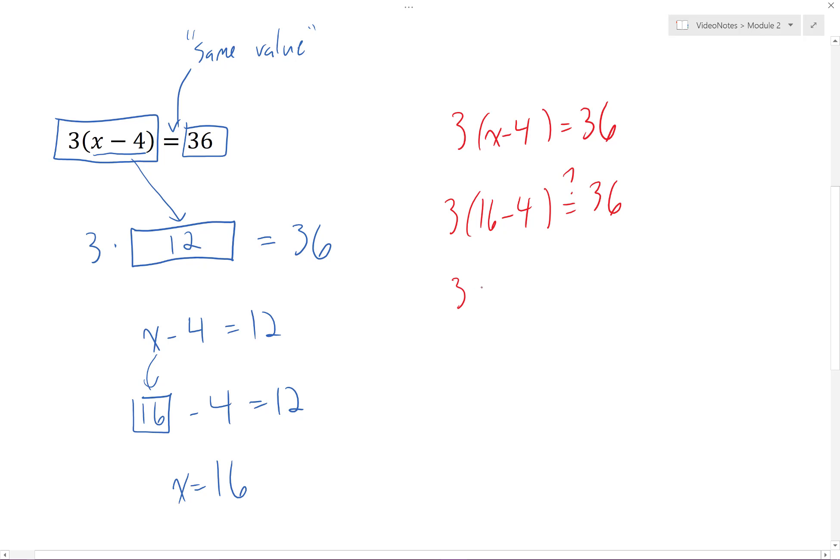16 minus 4 is equal to 12. Is 3 times 12 equal to 36? Yes, 3 times 12 is equal to 36.